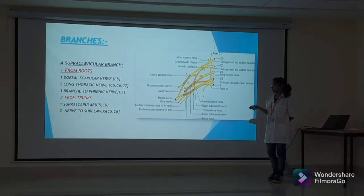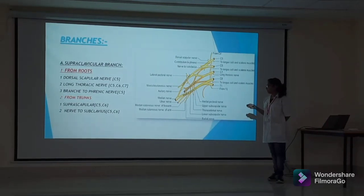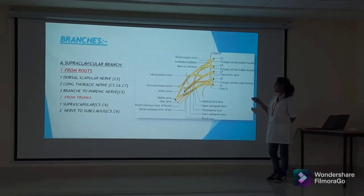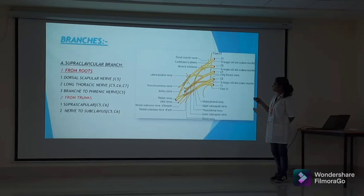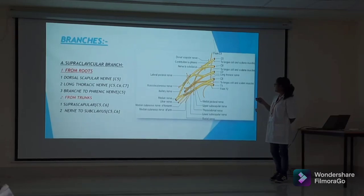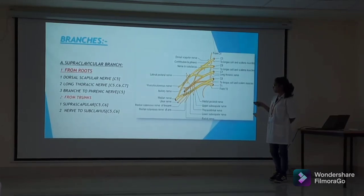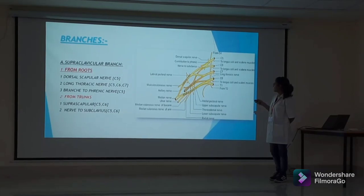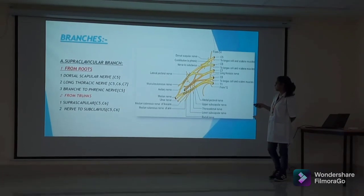Supraclavicular branches from the roots include the dorsal scapular nerve, long thoracic nerve, and a branch to the phrenic nerve. From the trunks arise the suprascapular nerve and the nerve to subclavius.